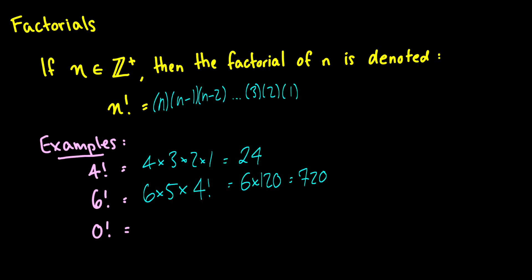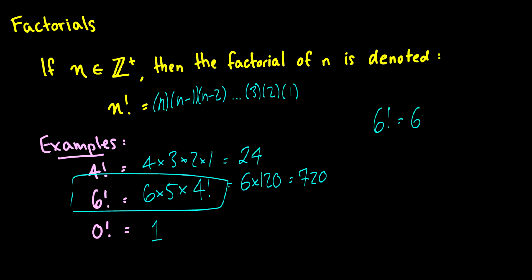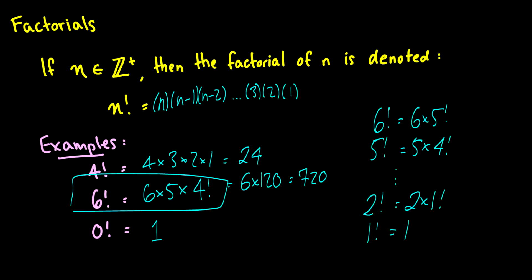The only interesting thing about 0 factorial is that we just assume this is equal to 1. You can write 6 factorial as 6 times 5 factorial, and 5 factorial as 5 times 4 factorial. You keep going down until 2 factorial is 2 times 1 factorial, and we just define 1 factorial as equal to 1. So this is a nice recursive definition and this will help a lot when doing proofs with combinations later.